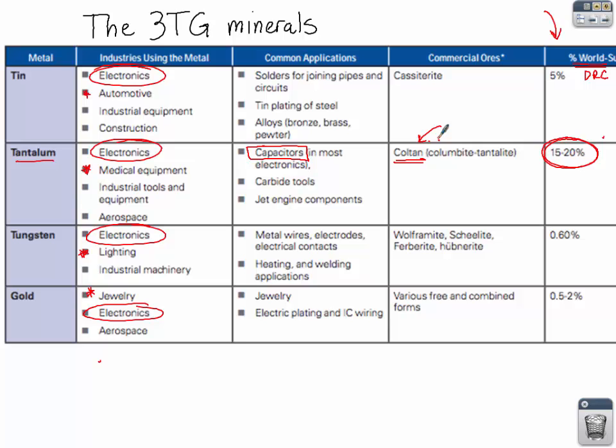These are the things we want to be aware of so that we can make decisions in our lives to not support these types of activities. The three TG minerals are something to keep in the back of your mind, because these are the ones that are so used in society.